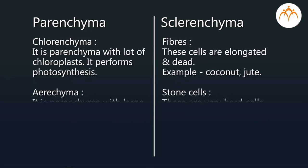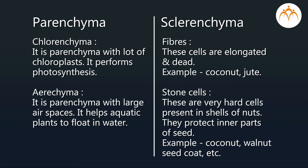Chlorenchyma is parenchyma with a lot of chloroplasts; it performs photosynthesis. Aerenchyma is parenchyma with large air spaces; it helps aquatic plants to float in water.